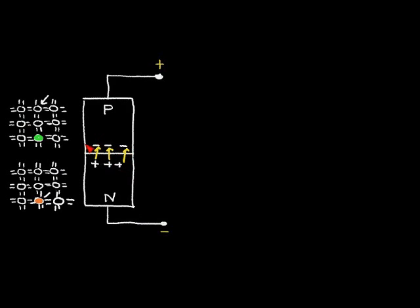This electric field region is the key to understanding the operation of the solar cell. When light comes into the p-region, it can knock an electron out of its bond with a silicon atom, producing a free electron and a free hole. If a hole moves into the electric field region, it is pushed away toward the positive side. If an electron enters the electric field from the p-region, it will be pushed down into the n-region.